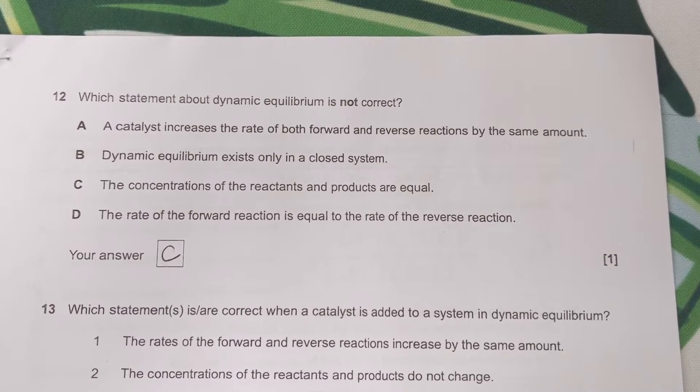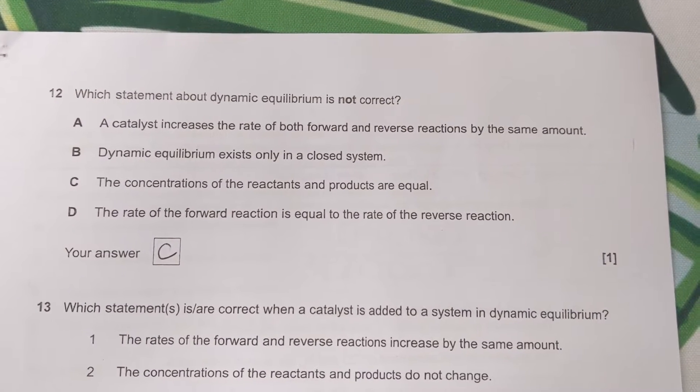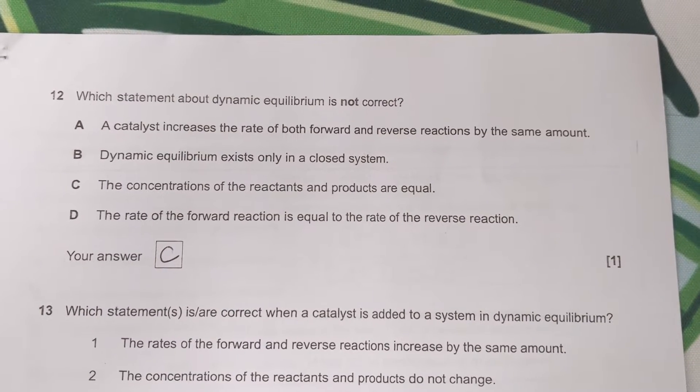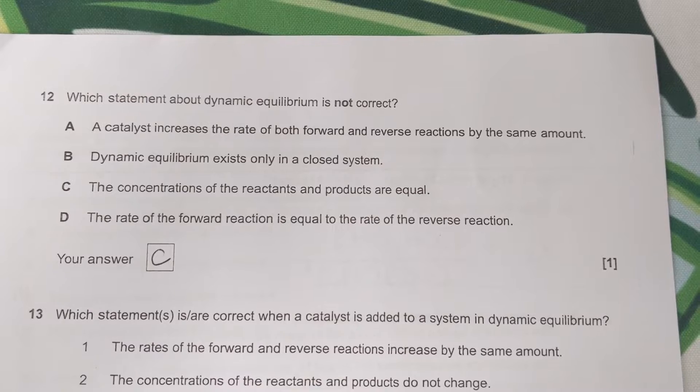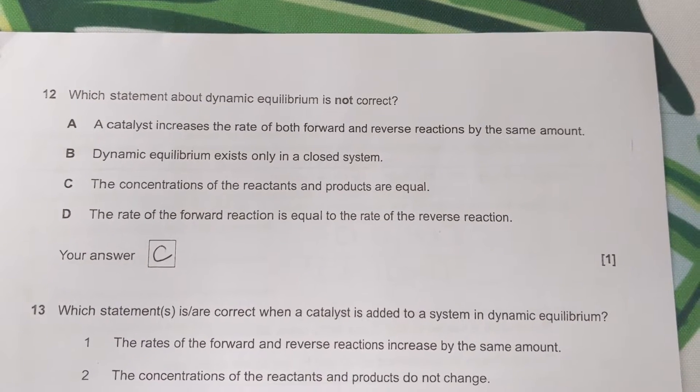Concentrations of reactants and products are equal - they remain constant, but they're not equal to each other. And D, the rate of the forward reaction equals the rate of the reverse - that is true. So the correct answer for the one that's not correct is C.